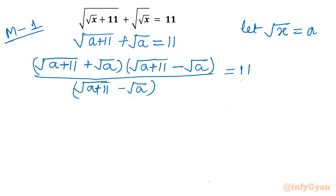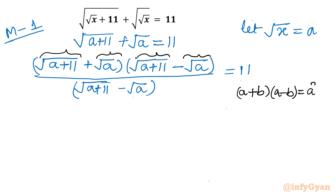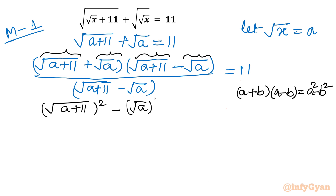Now we can see the (a plus b)(a minus b) form — the difference of two squares. Applying this, I write: [square root of (a plus 11)]² minus [square root of a]² over (square root of (a plus 11) minus square root of a), equal to 11.